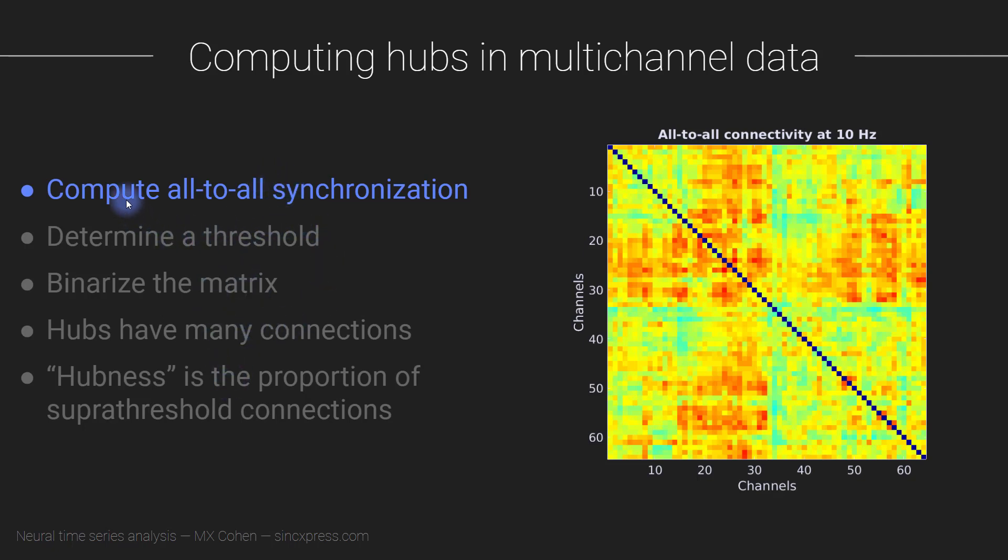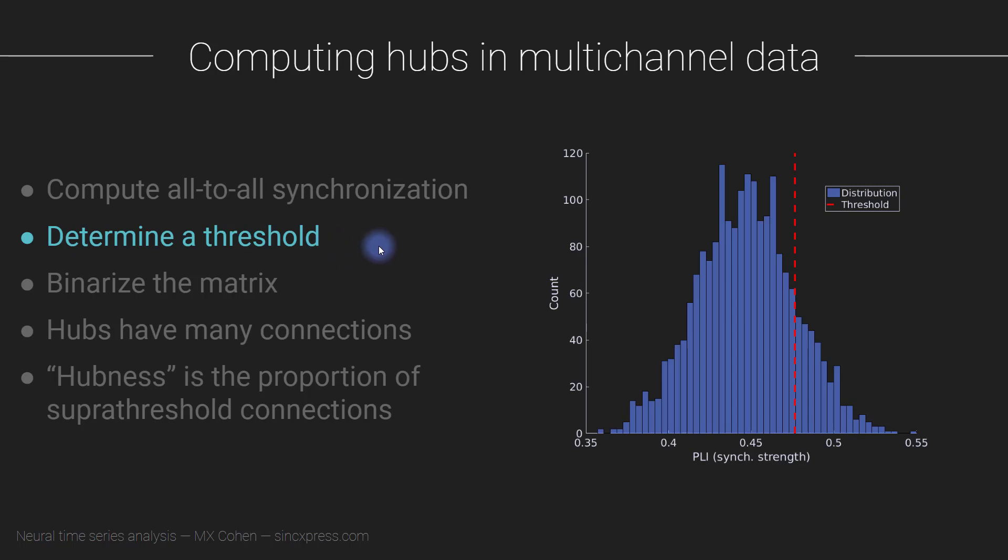Let's switch to electrophysiology and figure out how to compute this measure of hubness. You start by computing all-to-all synchronization. Here we have a matrix with channels on both axes - 64 by 64 from the EEG sample dataset. What you see by the colors is the strength of synchronization between each pair of electrodes at 10 Hz. The diagonal is set to zero because we don't want to consider the auto-synchronization terms. Now we need to determine a threshold.